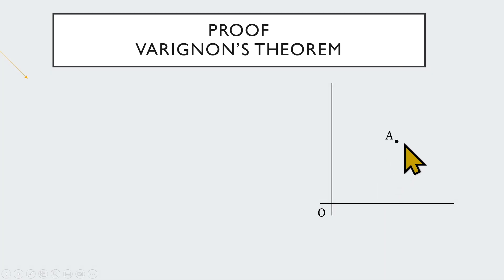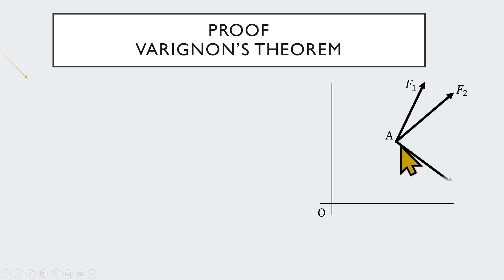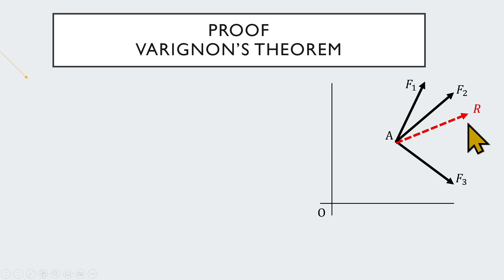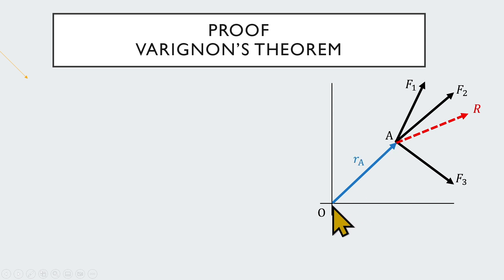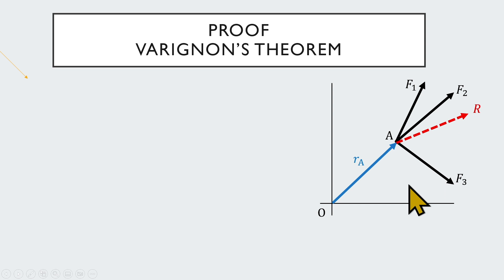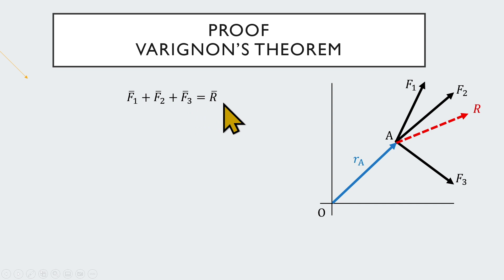At this point, three forces are acting: f1, f2, and f3. Let the resultant of the three forces be the force R. Here is the vector that represents the position of point A with respect to O — nothing but the position vector of point A. Since R is the resultant of the three forces, we can write f1 plus f2 plus f3 equals R.